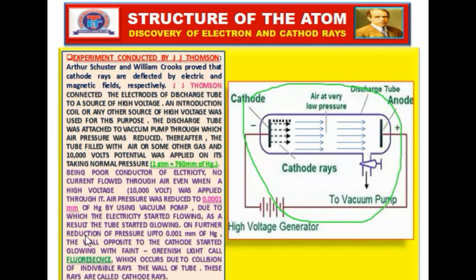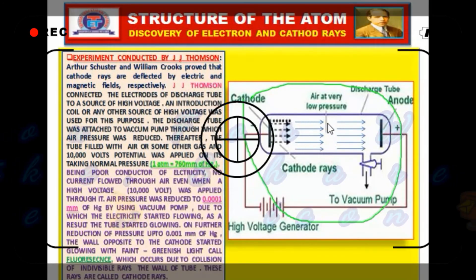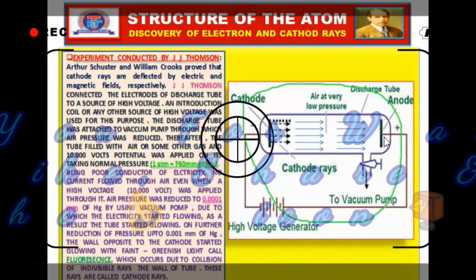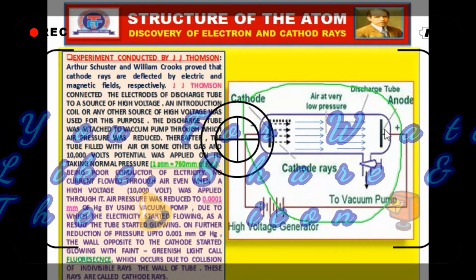After his experiment, JJ Thompson identified some properties of cathode rays. In the next video, I will explain those properties of cathode rays one by one.